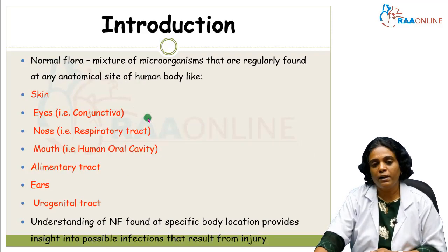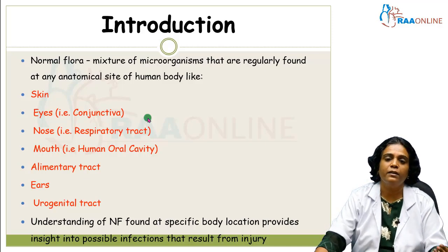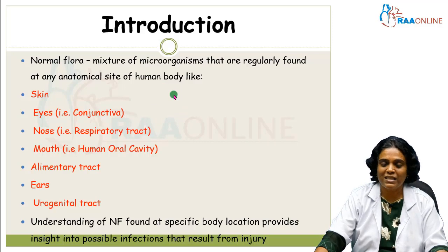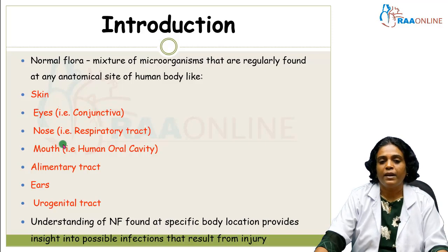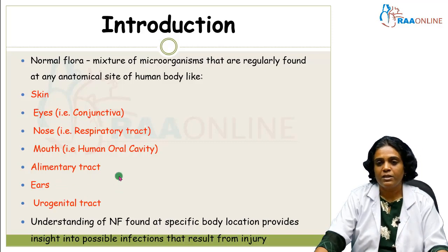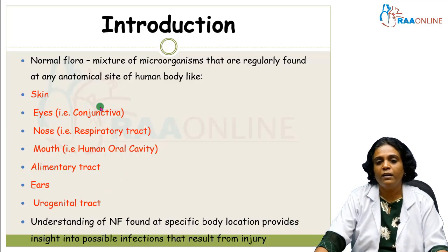Normal microbial flora is a diverse group of microorganisms which includes bacteria, viruses, fungi, and parasites, and they are present at a particular anatomical site in the human body. The sites where we commonly encounter this normal microbial flora include mainly the skin, alimentary tract, urogenital tract, oral cavity, nose, eyes, and ears.